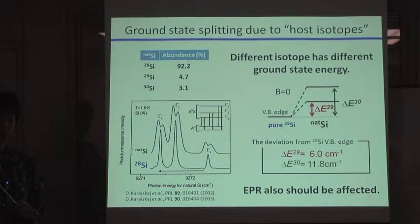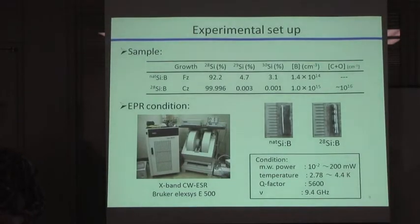We thought that the EPR measurement also should be affected by this splitting. And to confirm the isotope shift, we prepared two kinds of samples. The first sample is a natural silicon sample. And the other is a boron-doped isotopically highly purified 28-silicon sample. And to measure EPR spectrum, we employed a Bruker's Expand CW ESR spectrometer.